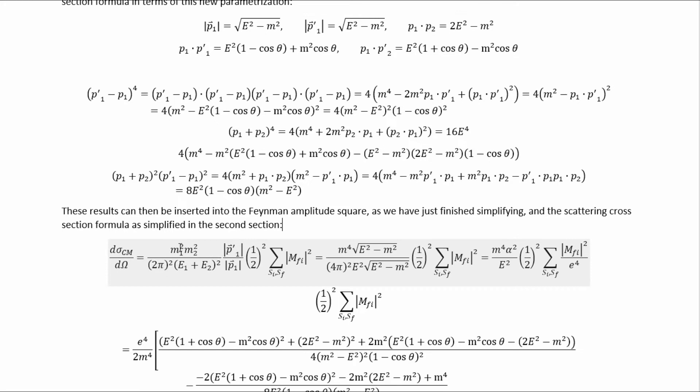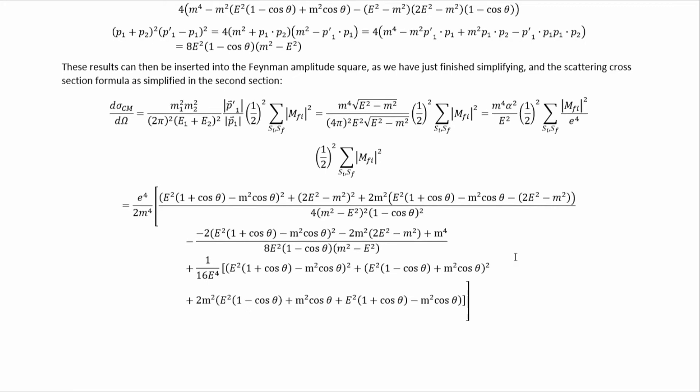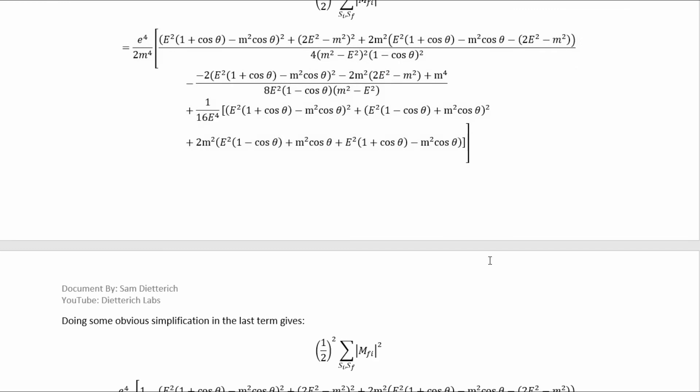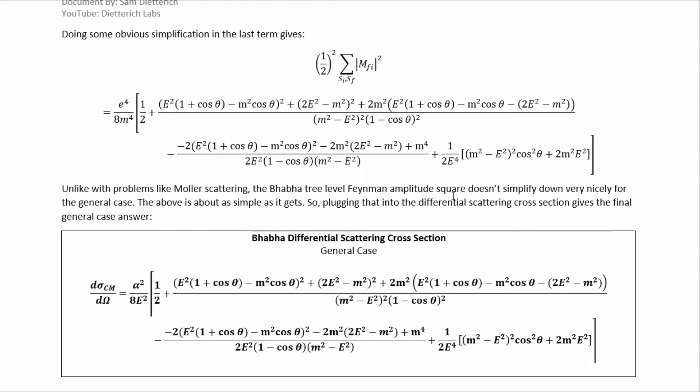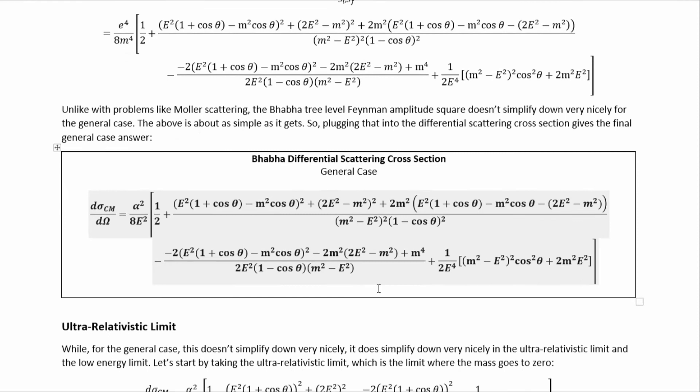We can then insert these into the center of mass frame differential scattering cross-section. At this point, we can recognize that the two masses are equal because they are antiparticles of each other. If the masses are equal and we're in the center of mass frame, then the energies must be equal, so E1 + E2 becomes 2E. Plugging in the values for the magnitudes of the momentum vectors and rewriting in terms of the fine structure constant, we get the general BABA differential scattering cross-section. Unlike Møller scattering, the BABA tree-level Feynman amplitude squared doesn't simplify down very nicely for the general case — the above is about as simple as it gets.